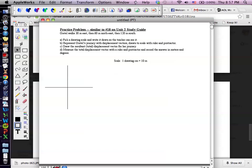Okay. Now I'm going to do this without a ruler, but you should use a ruler. So first she walks 30 meters east. With this scale, that would be 3 centimeters.